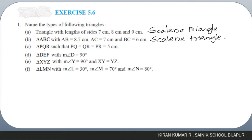Triangle PQR where PQ, QR, and PR are all equal to 5 cm — since all sides are equal, it forms an equilateral triangle.